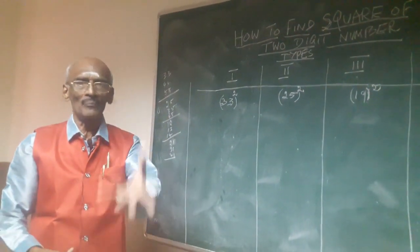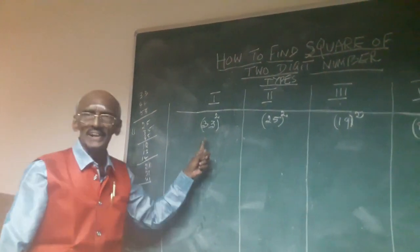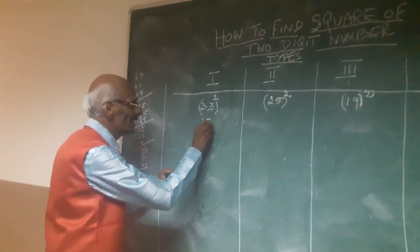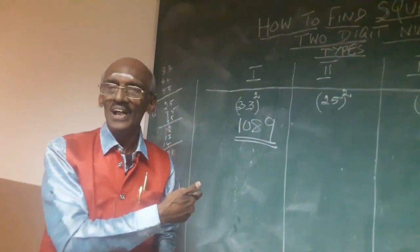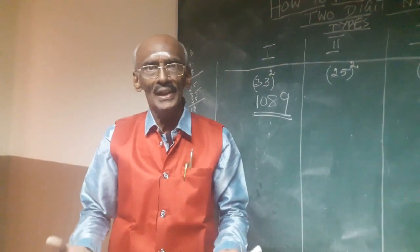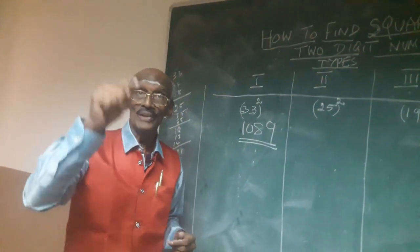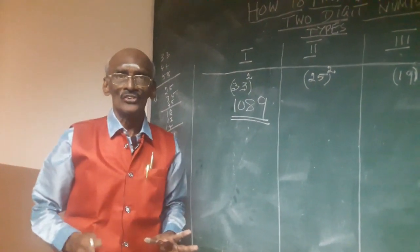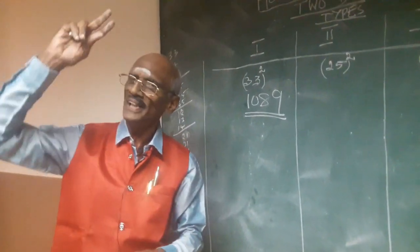Let me take the first example: 33 squared equals 1089. So within two seconds I found the answer. I don't have anything — no calculator, no paper, no pencil. I found the answer in my mind by applying the shortcut method. You can also apply this shortcut method and find the answer within two seconds.